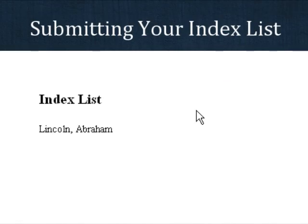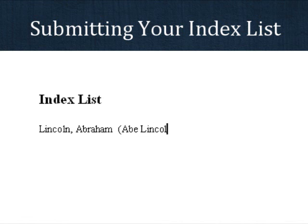You'll notice now that the entry on page 11 has been removed. If you are paying for index creation, here is a tip about how to submit your index list. Let's say, for example, that one of the entries in your index is Lincoln, comma, Abraham. When submitting your list to us, we would prefer that you put any or all permutations of the entry in parentheses after the entry. For this example, I'm going to include two variations: Abe Lincoln and President Lincoln. If you do not include these variations in parentheses, they may not be included in your index.